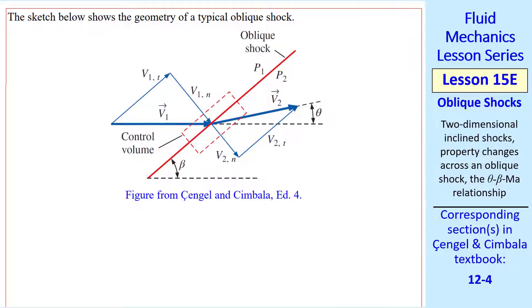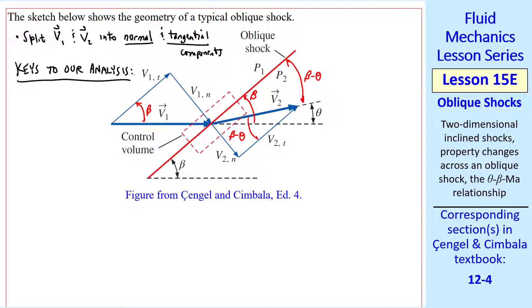Let's analyze some of the angles for a typical oblique shock. We split V1 and V2 into normal and tangential components. As you see here, the tangential component of V1, the normal component of V1, and then the normal component of V2 and the tangential component of V2. This turning angle is theta, and the shock angle is beta. This angle must also be beta, and this angle is beta minus theta.